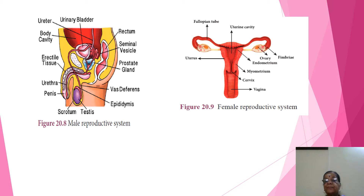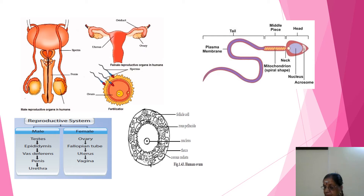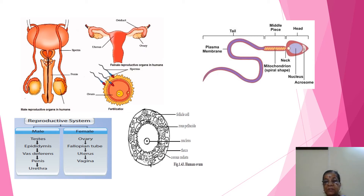For reference, in the male system: testis, epididymis, vas deferens, penis, and urethra. In the female system: ovary, fallopian tube, uterus, and vagina. You may refer to the previous session for detailed labeling of these diagrams.